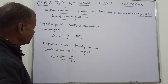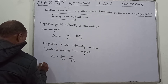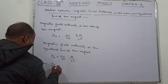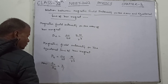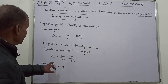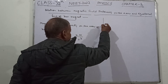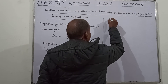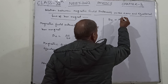Now you can have a relation between the two. Ba upon Be — what we have? Ba gives us 2 upon 1. So Ba is 2 times of Be. Ba is equal to 2 times of Be.